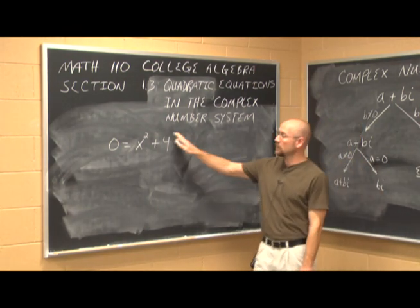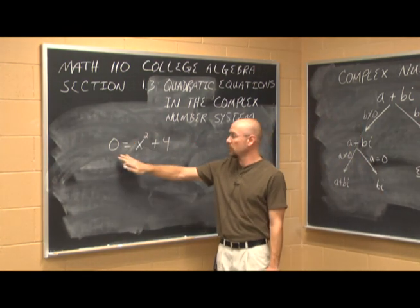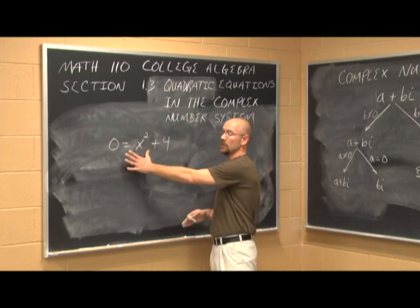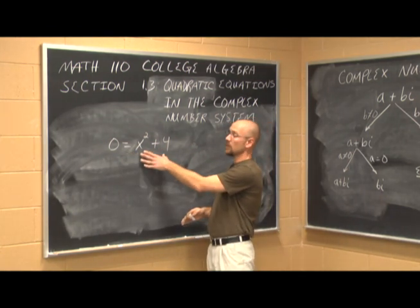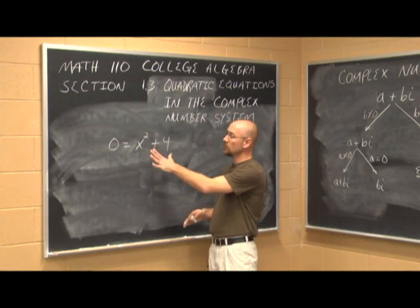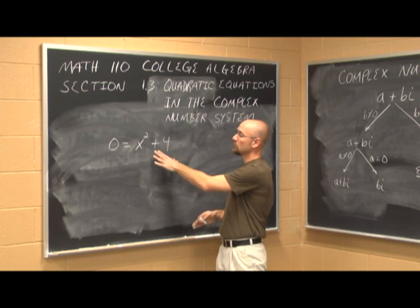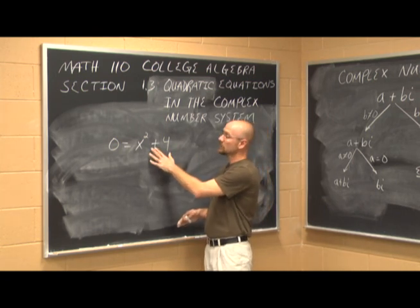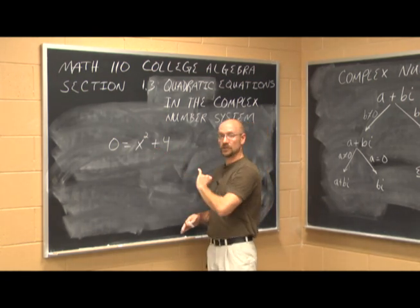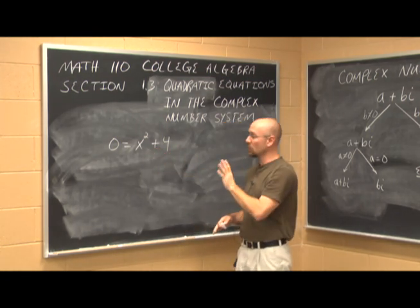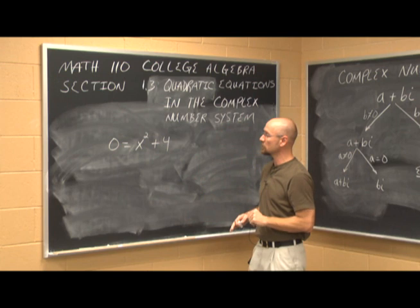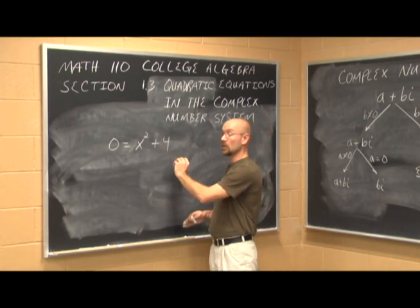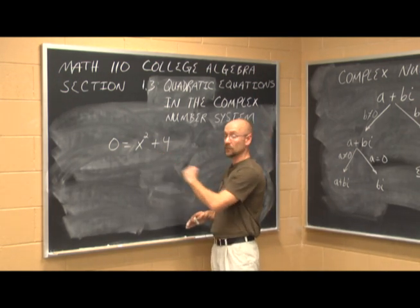Looking at this first example — a quadratic equation — we might want to try factoring. The sum of squares does not factor; only the difference of squares does. So factoring isn't going to work here.